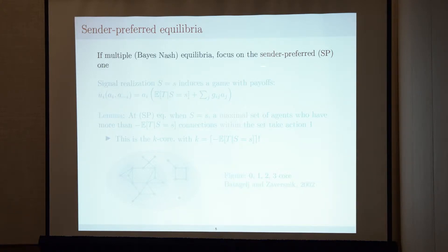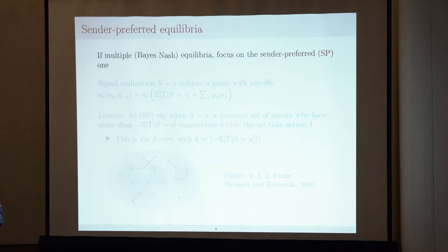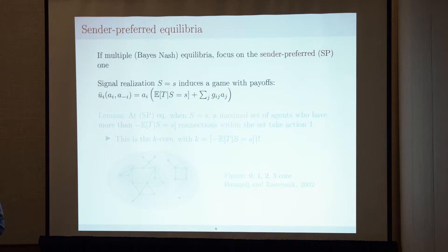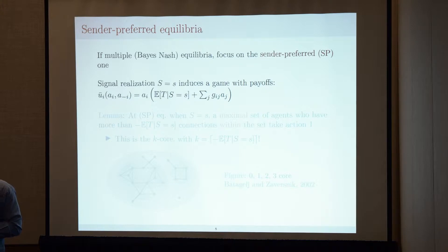This is the equilibrium where the largest number of agents take action one. Think about an arbitrary mechanism: what is the largest set of agents who take action one? Given a signal realization s, and focusing on public signals, all agents do the same update about the state — they all have the same posterior — and given the signal realization they basically play a game with these payoffs.